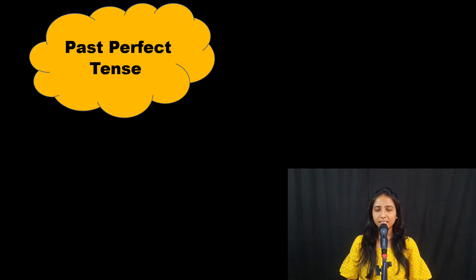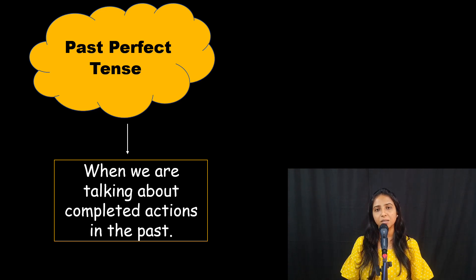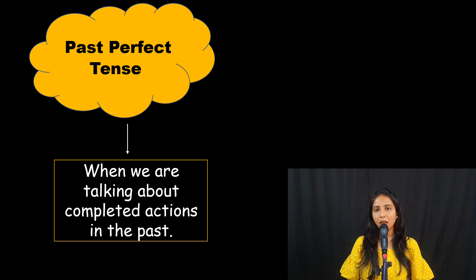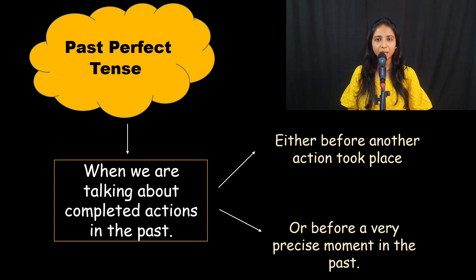Now let's see its usage. We use the past perfect tense when we are talking about completed actions in the past, either before another action took place or before a very precise moment in the past. Let's understand this better with the help of these example sentences.